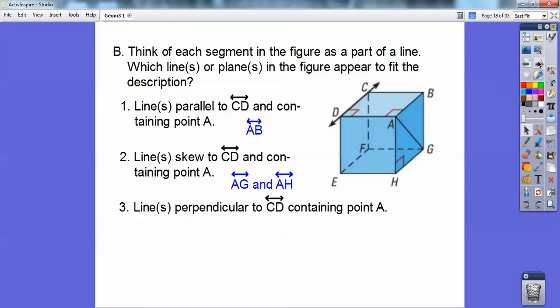Lines perpendicular to line CD that contain point A. So containing point A perpendicular is this dude right here, because of that right angle right there. So line DA or line AD with a line symbol on top of it.